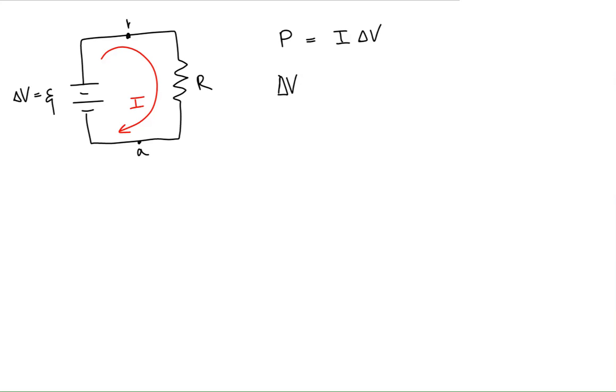So the potential difference from A to B, or rather, we'll go from B to A, going across our resistor, is equal to minus the current in the resistor times R. So this is Ohm's law. The minus is because the potential is lowering from high potential to low potential.